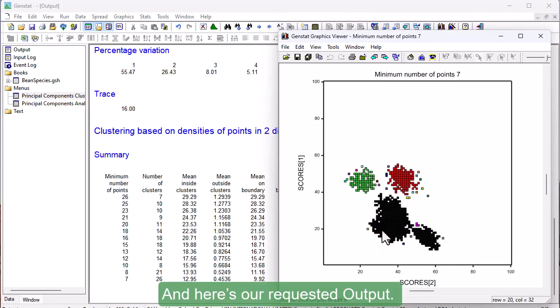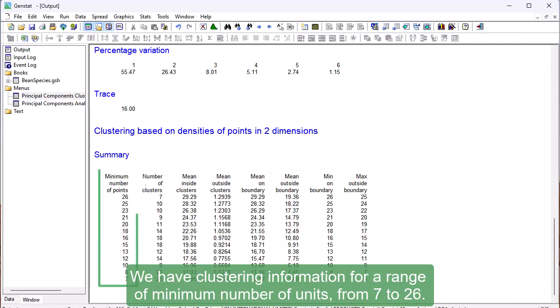And here's our requested output. We have clustering information for a range of minimum number of units, from 7 to 26.